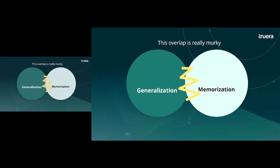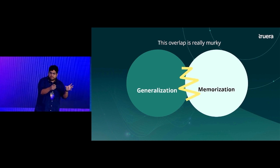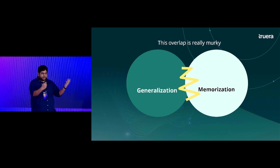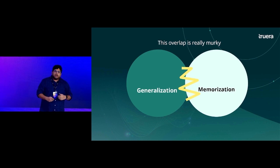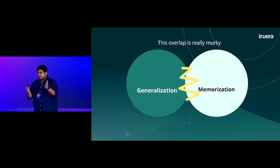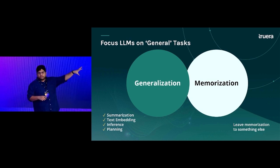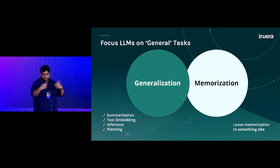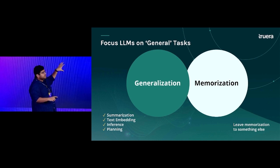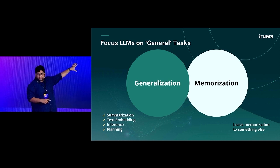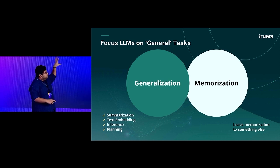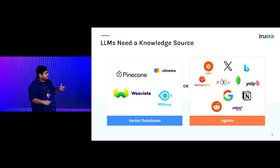This overlap between generalization and specific use cases is where most people are playing now. These models have real-world use cases, and when you're building those use cases you're trying to make them do a certain subset of tasks really well. This is where a new framework starts making sense: you leave the generalization part to the LLM, whatever LLM you're using.